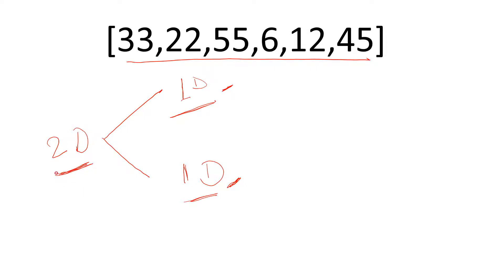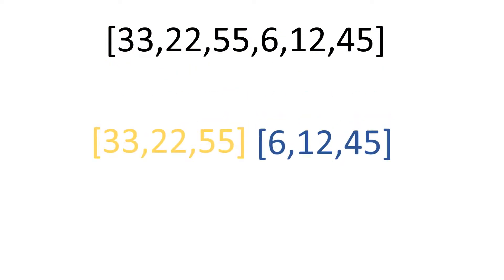Using this one-dimensional array, we want to create a 2D array. We can split this one into two parts, and the condition is that each of the two parts should have an equal number of elements. So we split it here — we get two sets of arrays, surround them in square brackets, and that becomes a two-dimensional array.